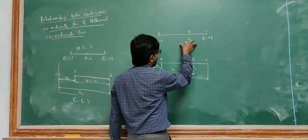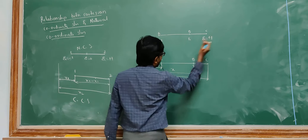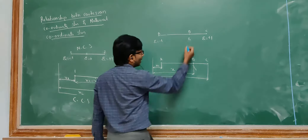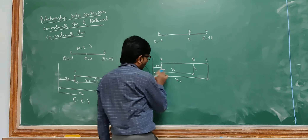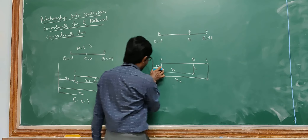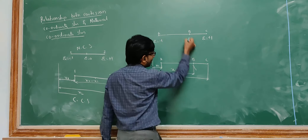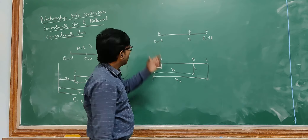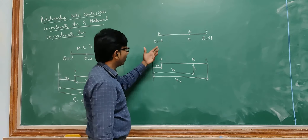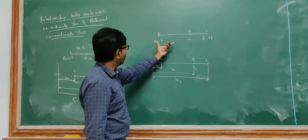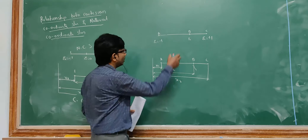We have taken an example element here which is called a line element. As you all know, the center is zeta equal to 0, here minus 1, here plus 1. At any random point I have marked and taken it as zeta — I just taken a random value zeta. In the Cartesian coordinate system the same nomenclature has been done: this is x1, this is x2. The same random point I will name as x. Both elements are the same but represented in different coordinate systems.